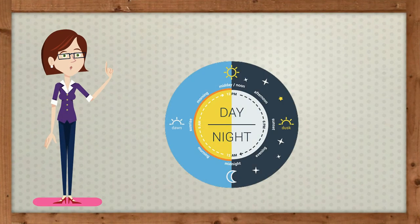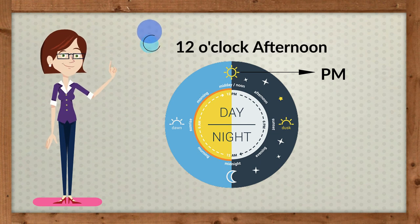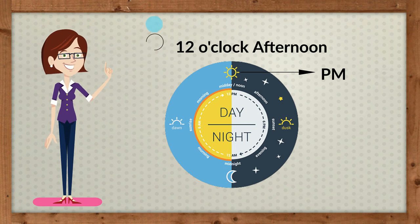While we use PM to tell the time between 12 o'clock in the afternoon and right before 12 o'clock at midnight.